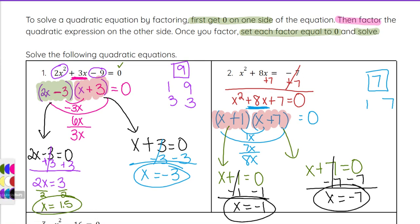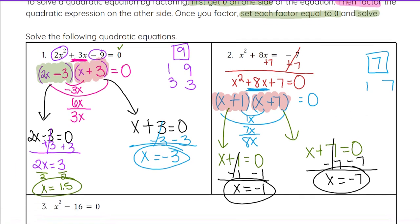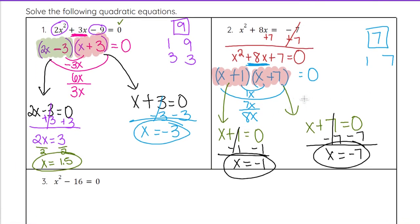So we see our solutions here by factoring and then setting each factor equal to 0 and solving. Now, the big key thing here is we need 0 on one side. If I would have just tried to factor as is up here and not had 0 on one side, it would not work out the same way. We can't just set each factor equal to whatever's over there. It has to be 0 on that side.